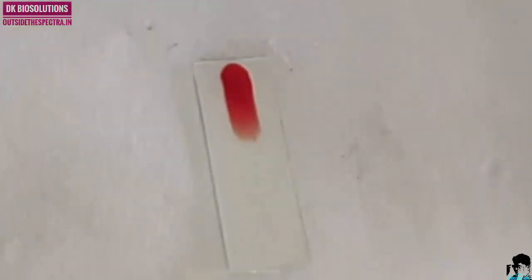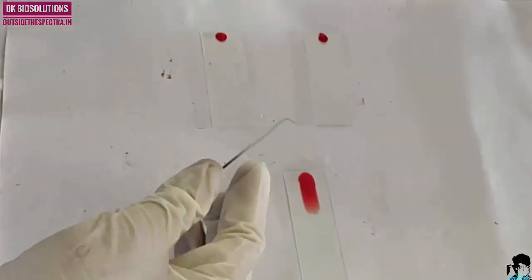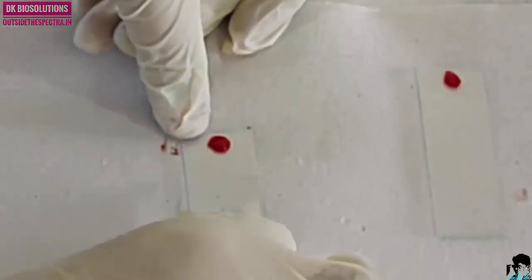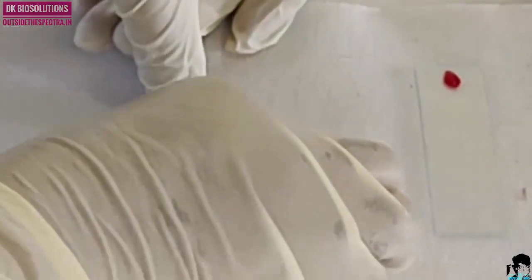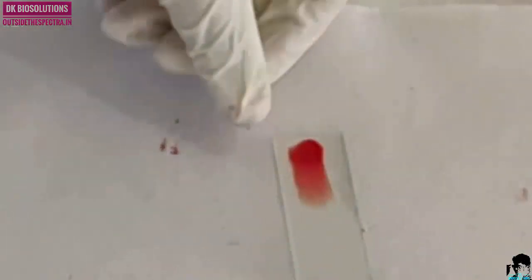To achieve a thin layer of blood, maintain a 45 degree angle in between spreader and blood slide. Now, you will get uniform blood film in a tongue shape nature.